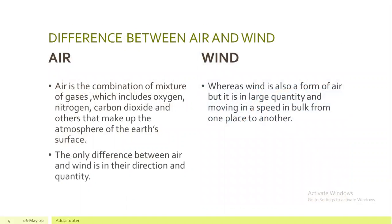Now let's look at the difference between air and wind. Air is a combination or mixture of gases which includes oxygen, nitrogen, carbon dioxide, and others that make up the atmosphere of the earth's surface. Whereas wind is also a form of air, but it is in large quantity and moving at speed in bulk from one place to another.